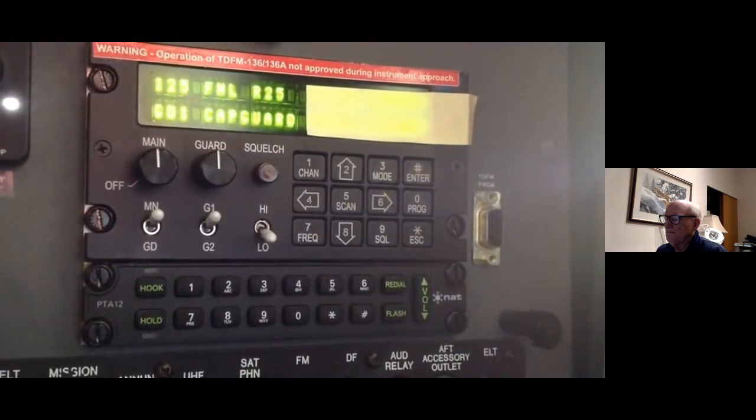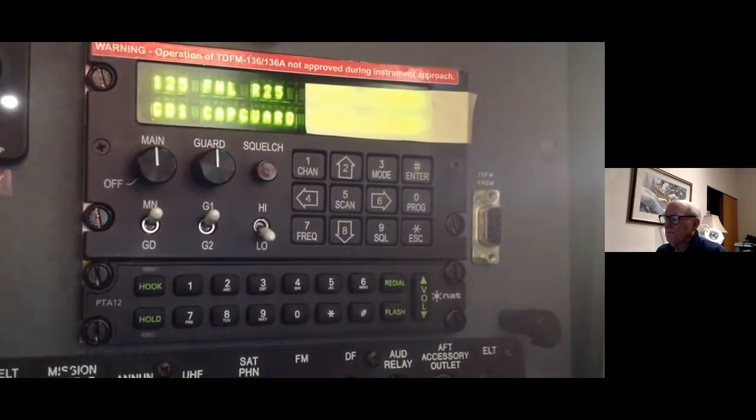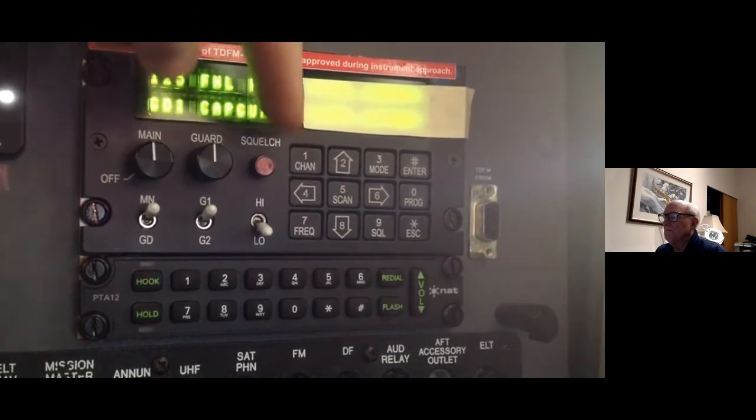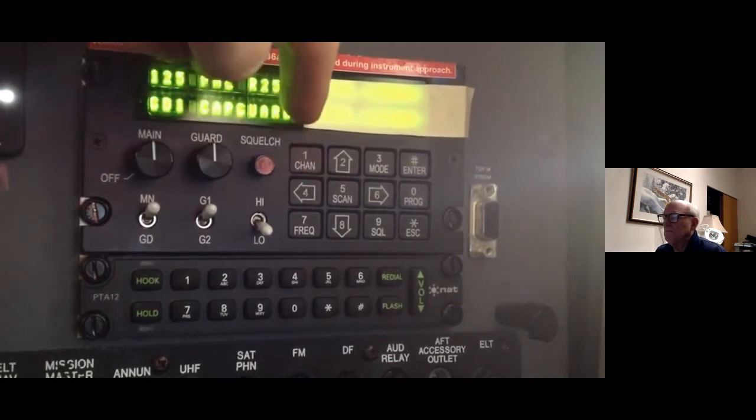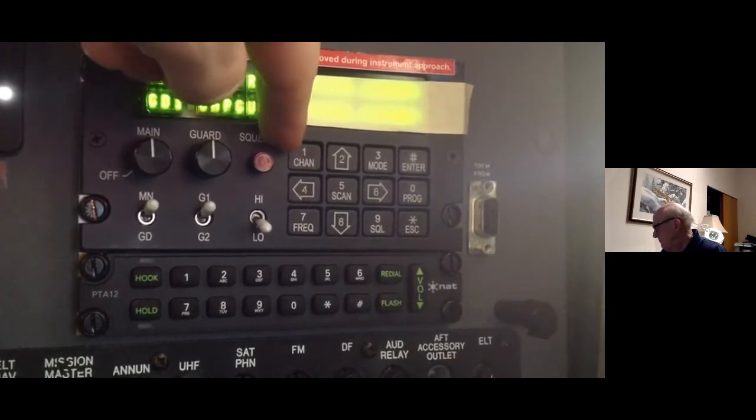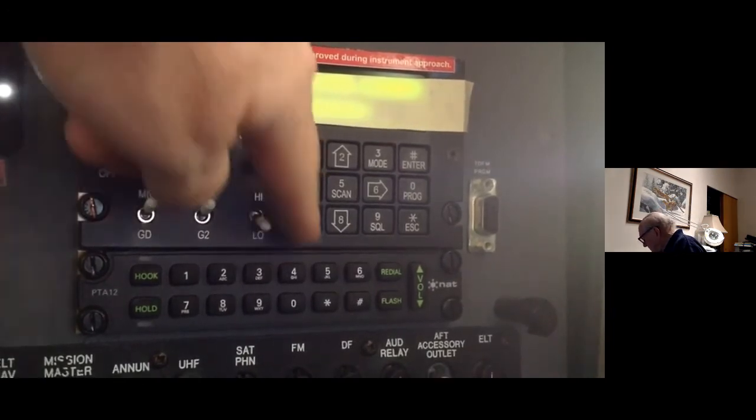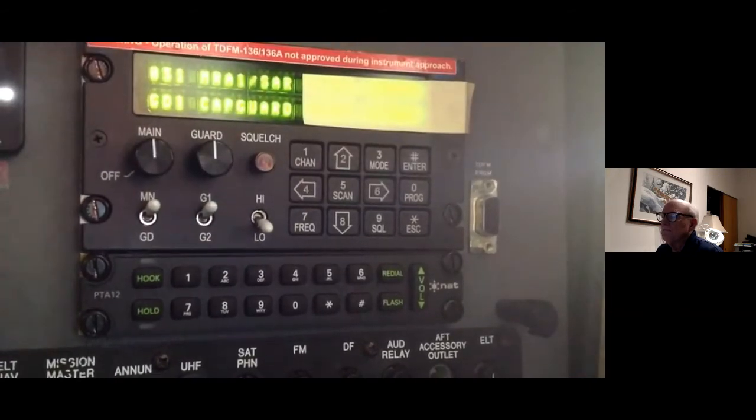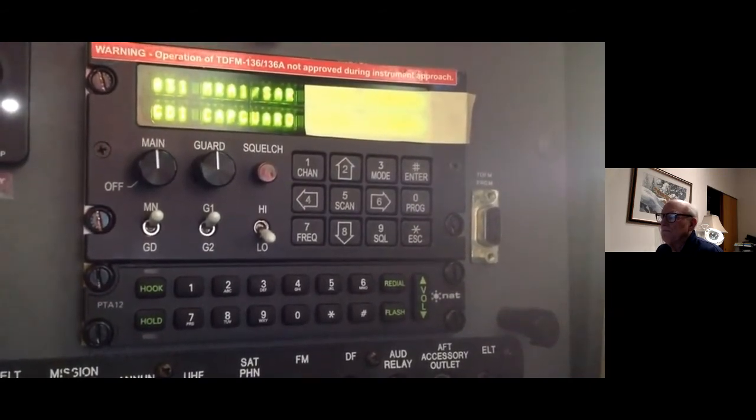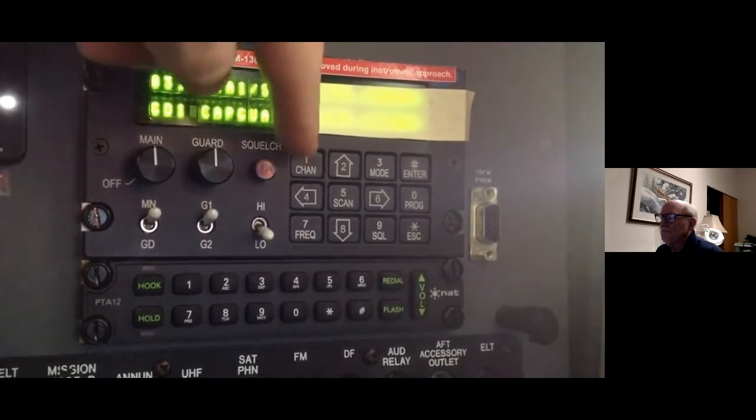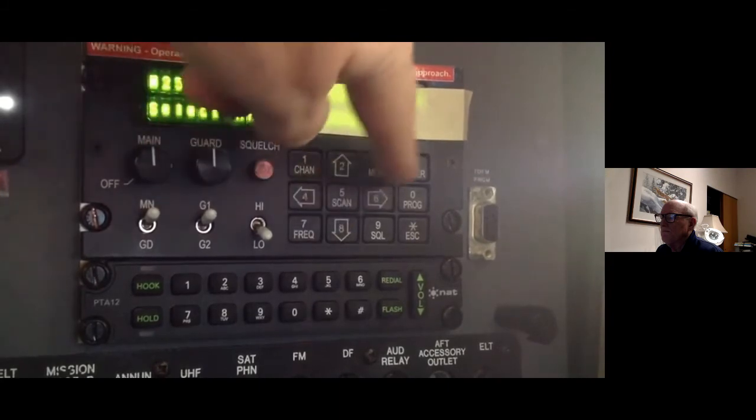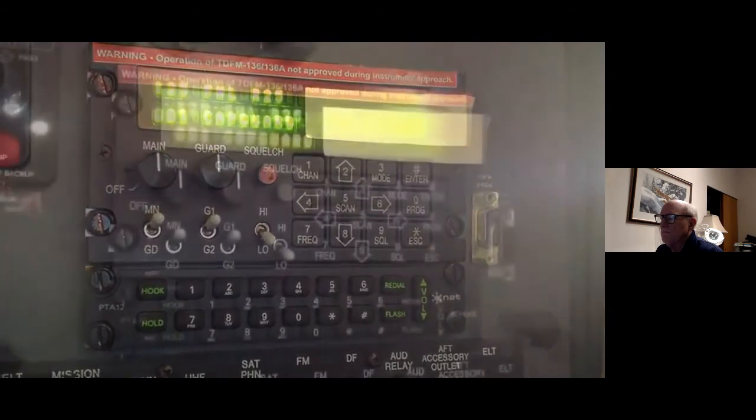All air crew members should be able to change the channels on the TDFM radio. To change the channel on the main part of the display, or the top part, press the channel button followed by the channel number. In this case I'm going to go to channel 31. So I press channel 031 ENTER. The radio changes to that channel. To change back to channel 125 I press channel and then 125 ENTER. The radio changes to that channel.